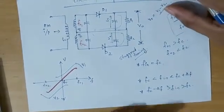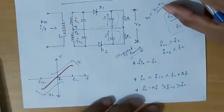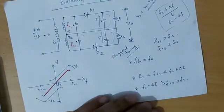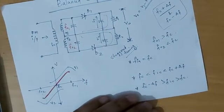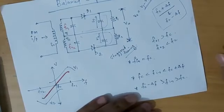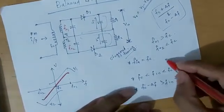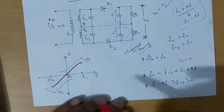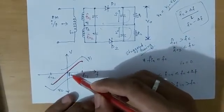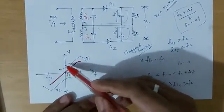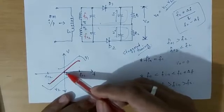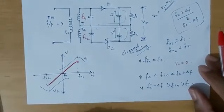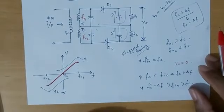When the instantaneous frequency equals the carrier frequency Fc, the voltages induced in both tuned circuits are equal and opposite. The current flows in opposite directions in the two circuits, and since the voltages are equal and opposite, the net output voltage V0 is zero.